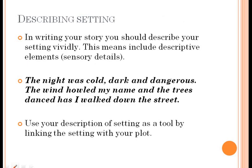If you're not familiar with what setting is, go back to video two — that was explained there. In writing your story, you must describe your setting vividly. When we talk about the word vivid, we mean very lifelike, true to life, with as much detail as possible. In this area of the story you need to pull on your descriptive writing and include descriptive elements. Therefore, we will see sensory details coming out. For example: 'The night was cold, dark, and dangerous. The wind howled my name and the trees danced as I walked down the street.'